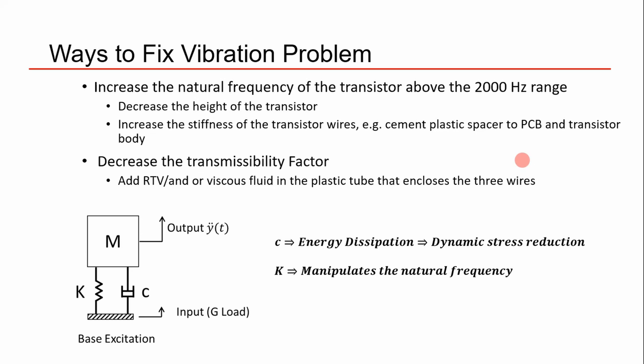Another approach is to decrease the transmissibility factor by adding silicone or RTV inside the plastic tube enclosing the three wires. This way, more energy gets dissipated by the plastic and viscous fluid, reducing transmissibility. The key takeaway: decreasing transmissibility means increasing the damping coefficient, which reduces dynamic stresses; while changing stiffness manipulates the natural frequency. These are the two key design levers.